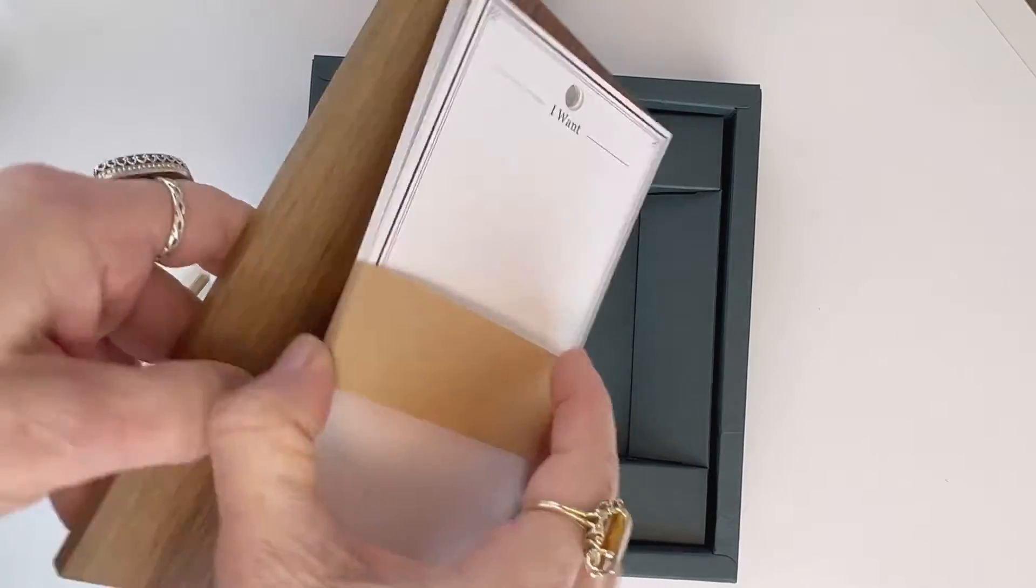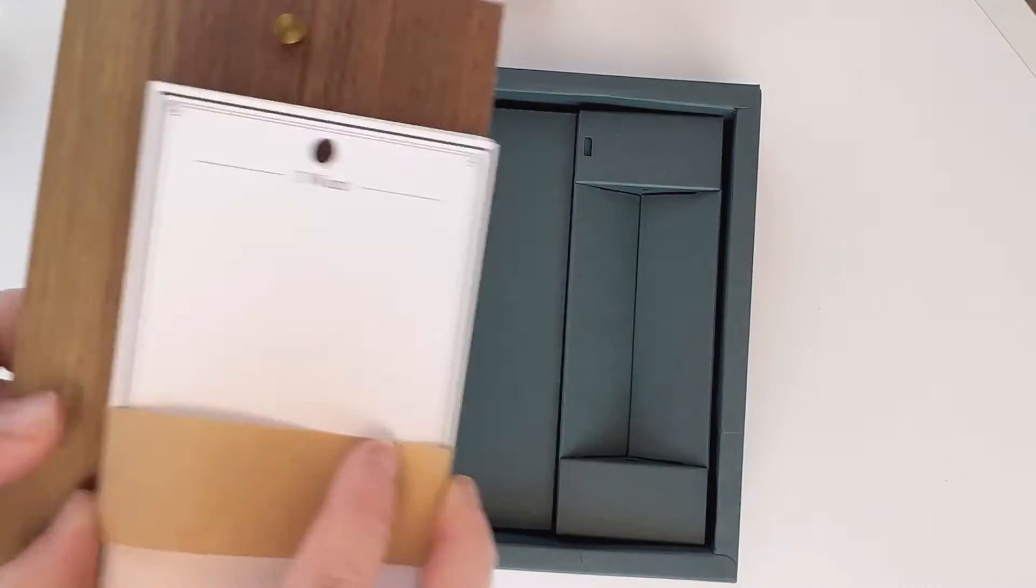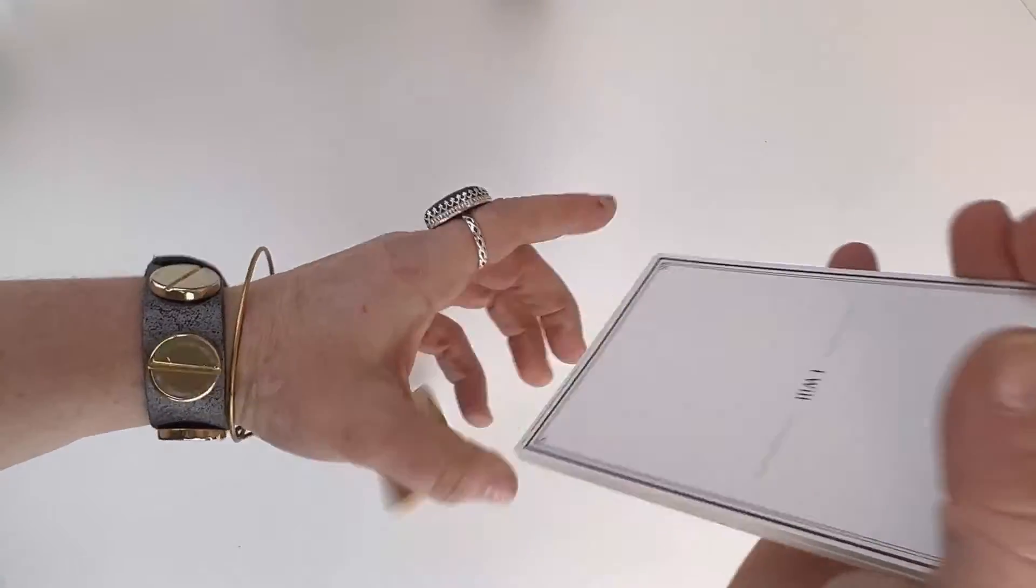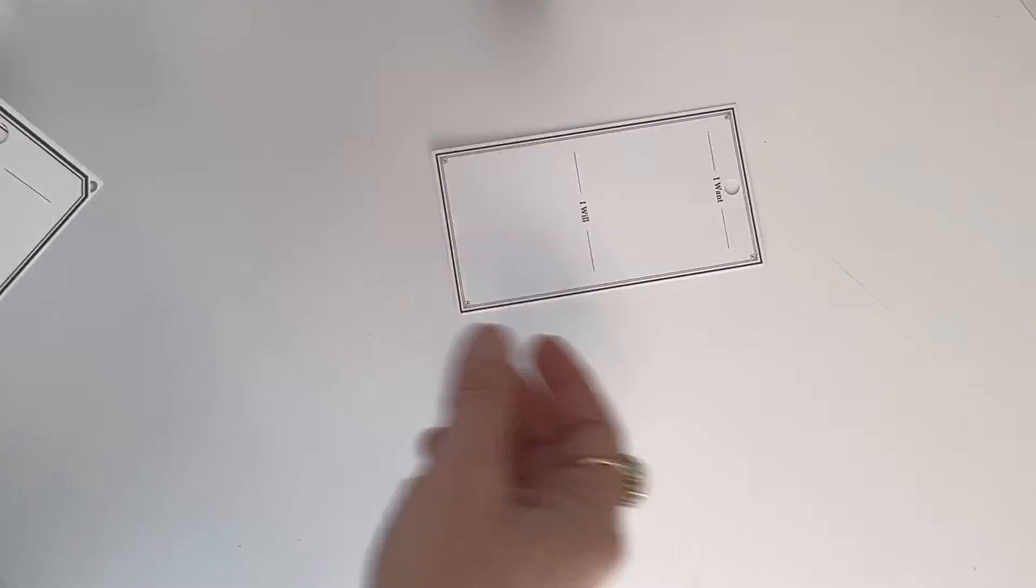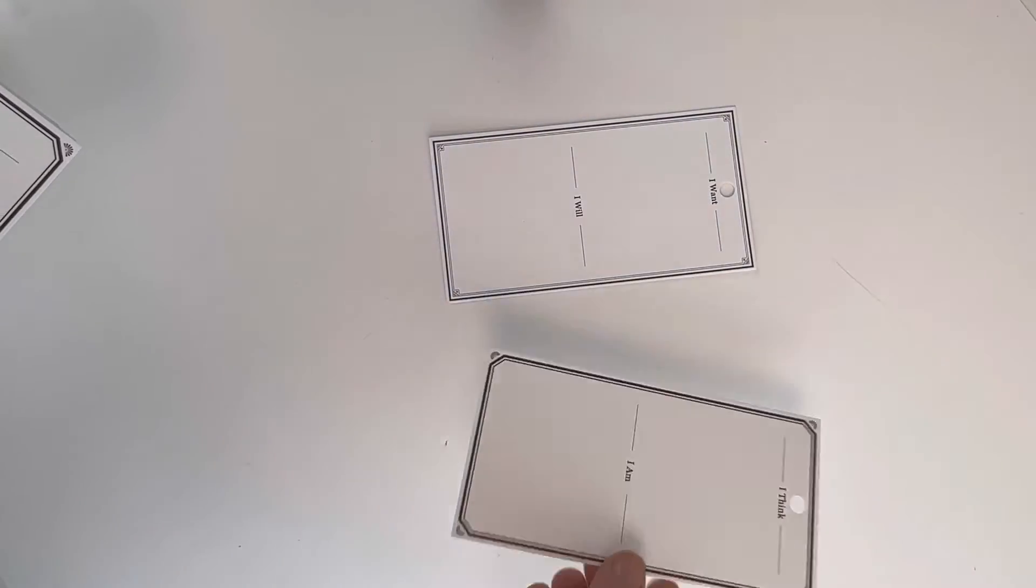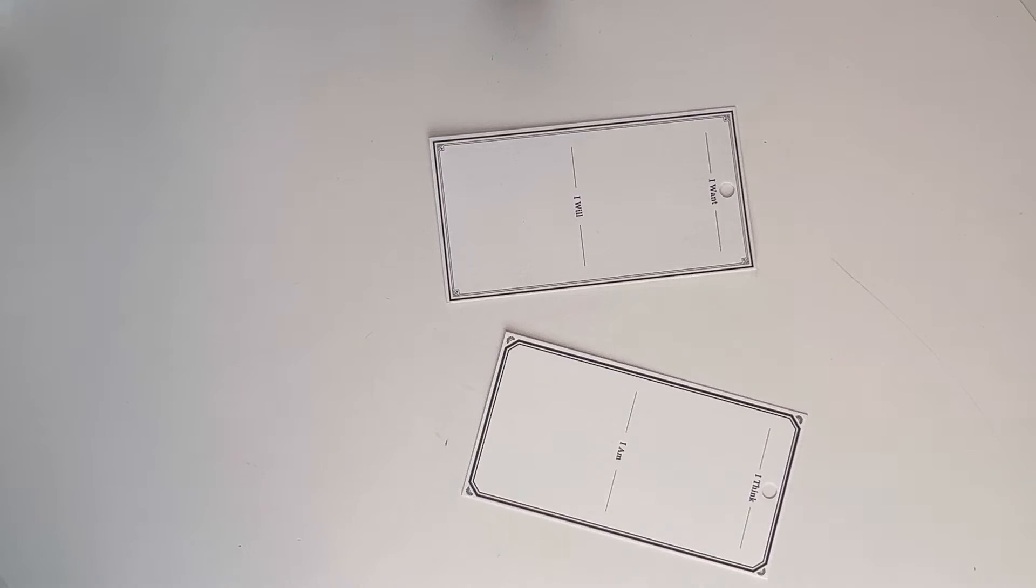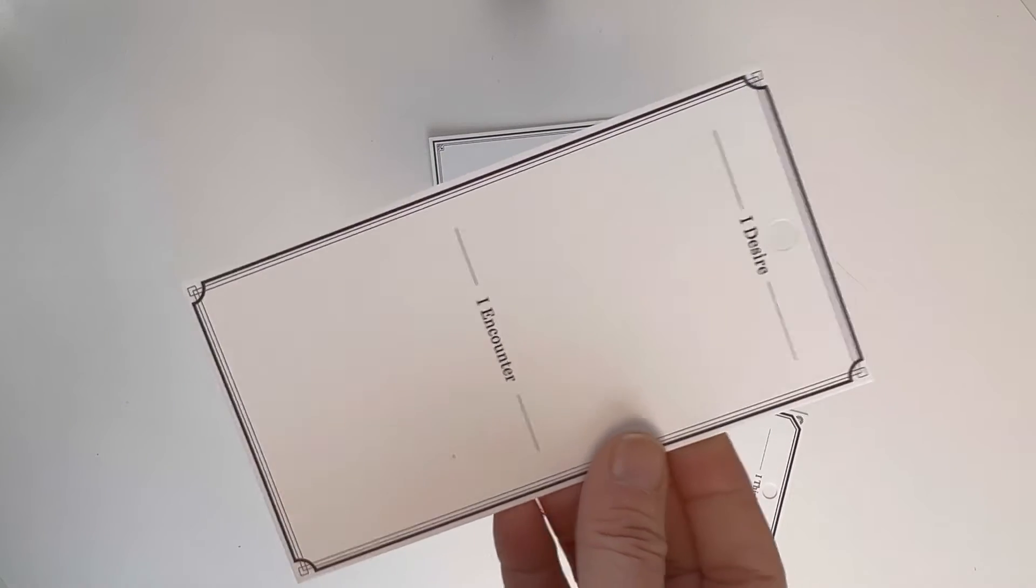The gift set includes a walnut wooden stand. It measures about 4.1 by 7 and a quarter inches. The My Resolute gift set comes with three different kinds of note cards. There's one that says I want and then at the bottom it says I will. There's one that says I desire followed by I encounter, and there's one that says I think followed by I am, and there's five of each.